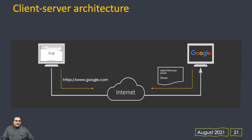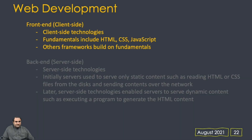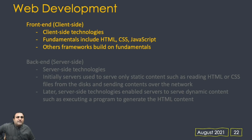For example, on one computer we have a browser running, and on another machine we have the Google server. On the browser, we connect to Google using its URL through the internet. Then the Google server sends back a document, that document is displayed by the browser, and this is what we see as a web page.